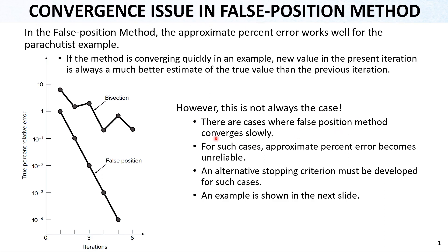The false position can be converging slowly sometimes, and for such cases, the approximate percent error becomes unreliable. An alternative stopping criterion will need to be developed for the false position method. We will show an example of how it may converge slowly or may not work in the next slide.